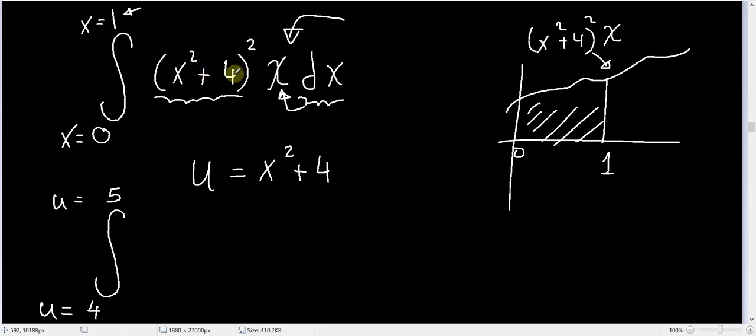x² + 4 is equal to u, so here we have u², and here we have x dx.